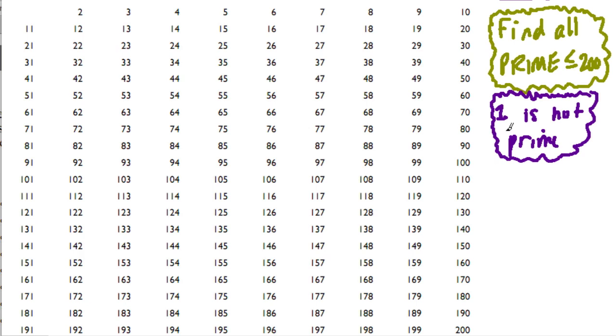So like the number three is prime because it has two factors, one and three, and they're two different factors. One is not prime because it only has two factors, one and itself. It needs to have two different factors. So one is not prime.